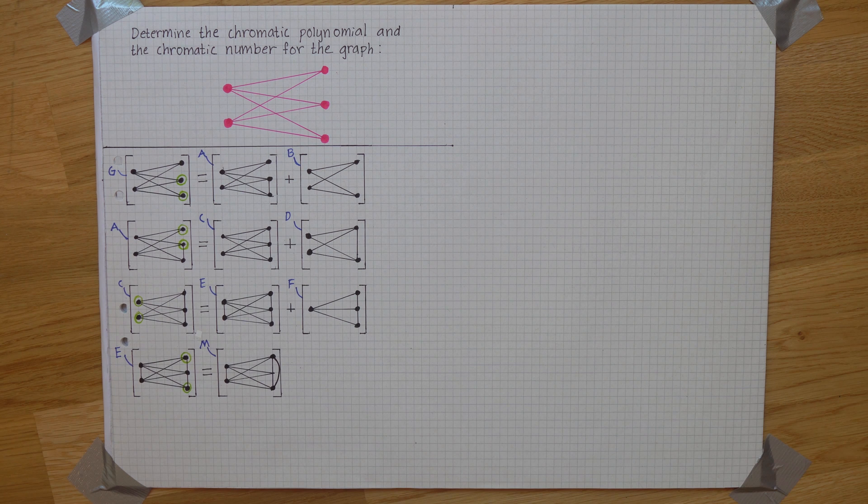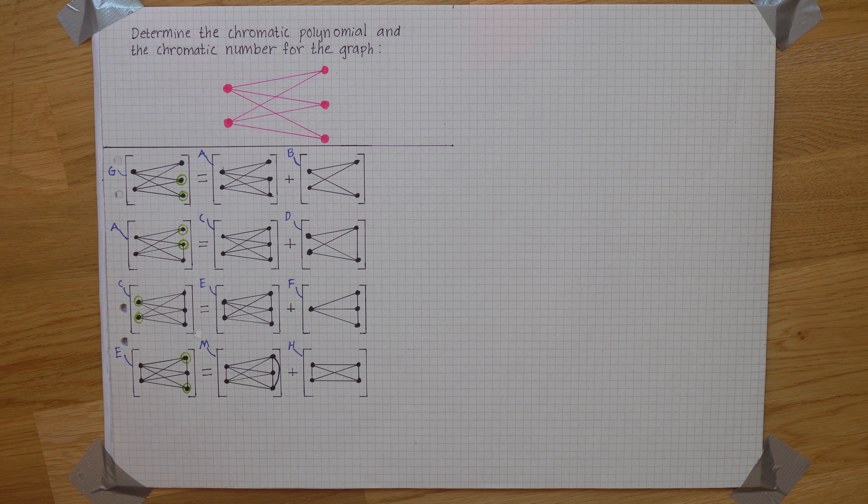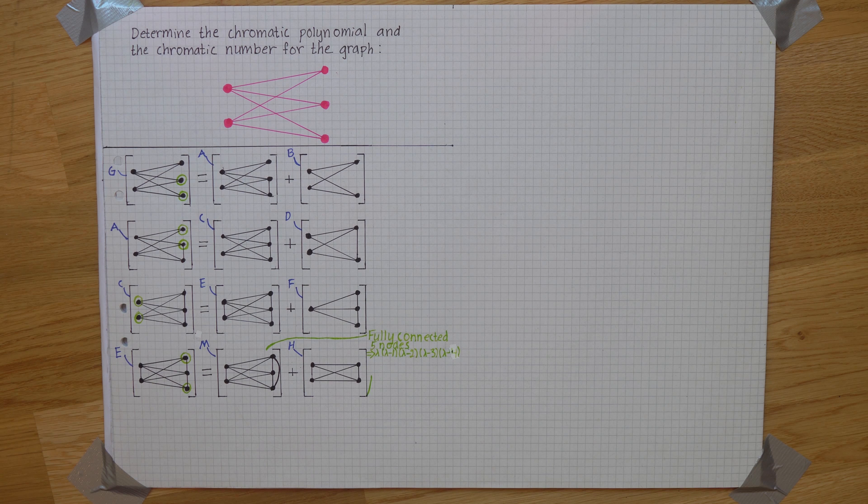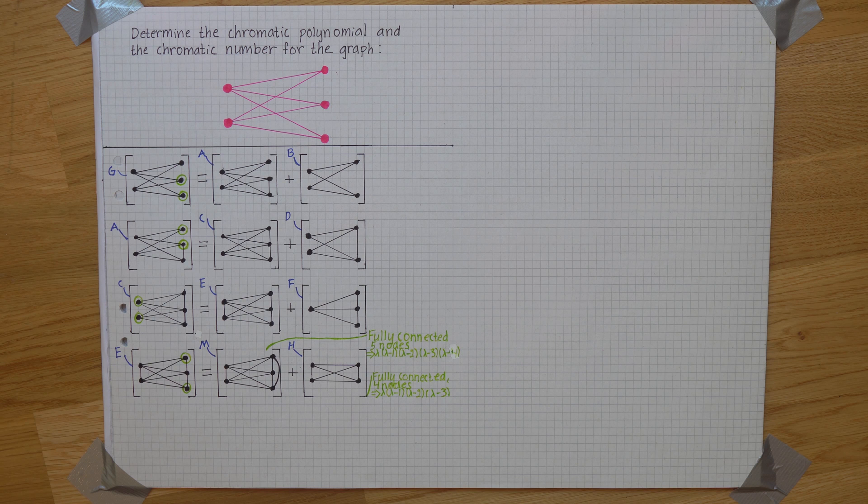So let's go ahead and add a connection there as well. And that extra connection means that there is an edge from any one node to every other node in M which makes it a fully connected graph with five nodes giving us this. And the same goes for H. The fact that all nodes are connected makes it a fully connected graph with four nodes and this polynomial.